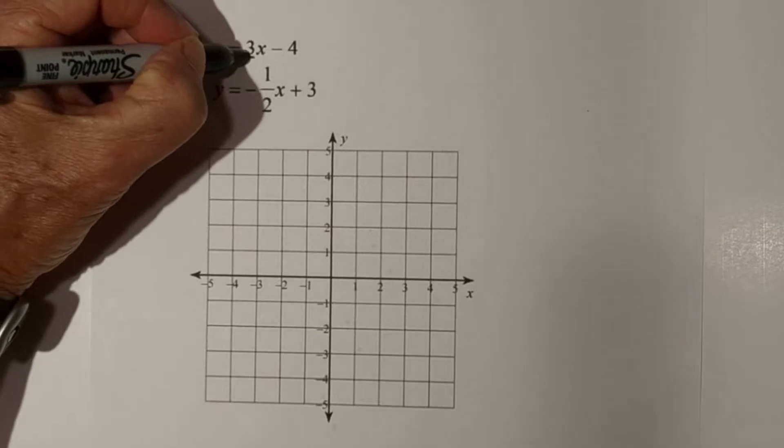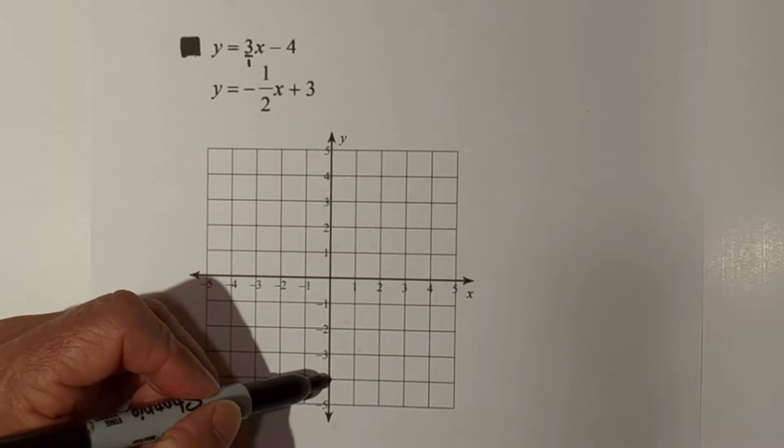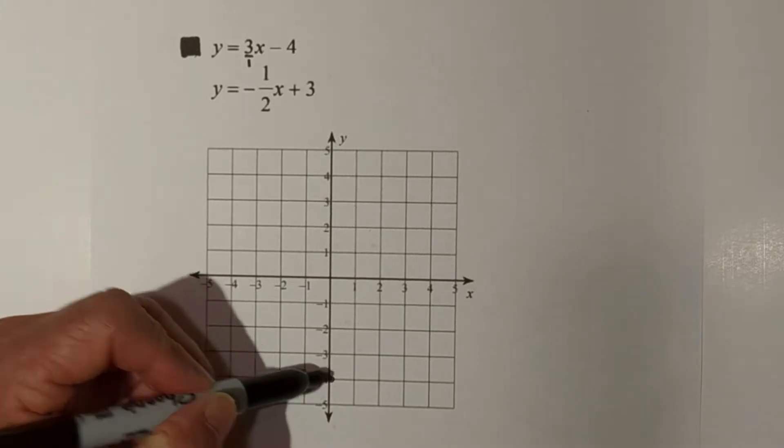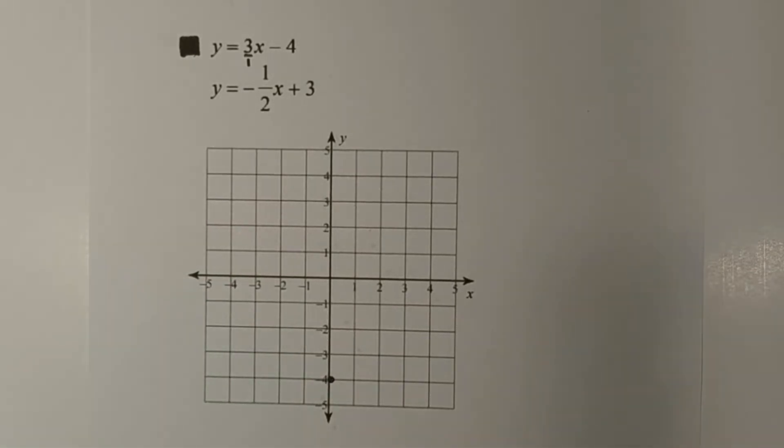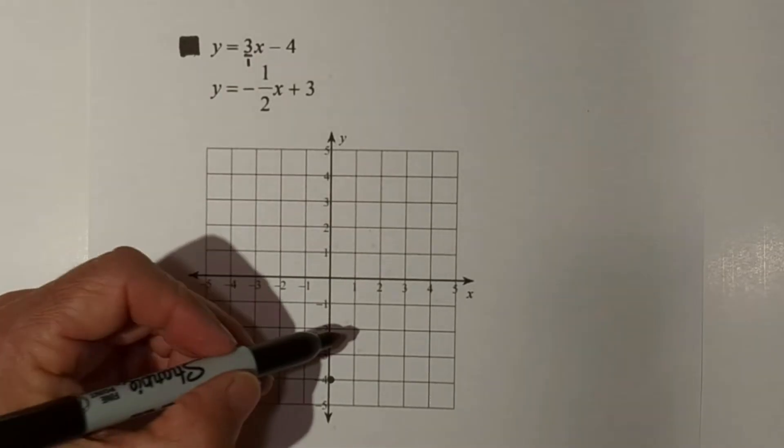If you'd like, you can write this as three over one. We begin always with b, and that's a negative four. So I'm going to start at b, which is negative four. Then, since it's positive and you always read from left to right, I'm going to go up three and to the right one.